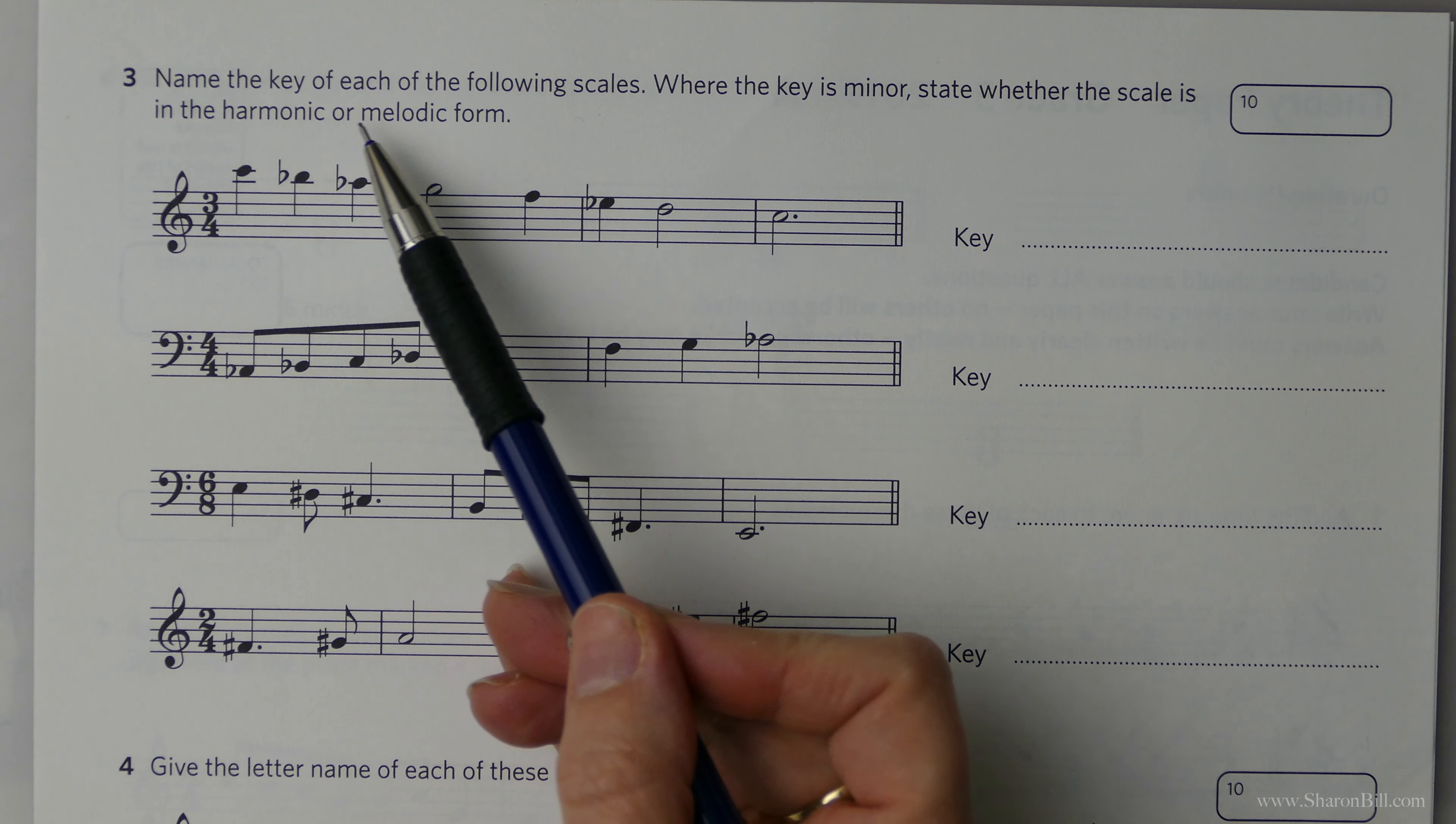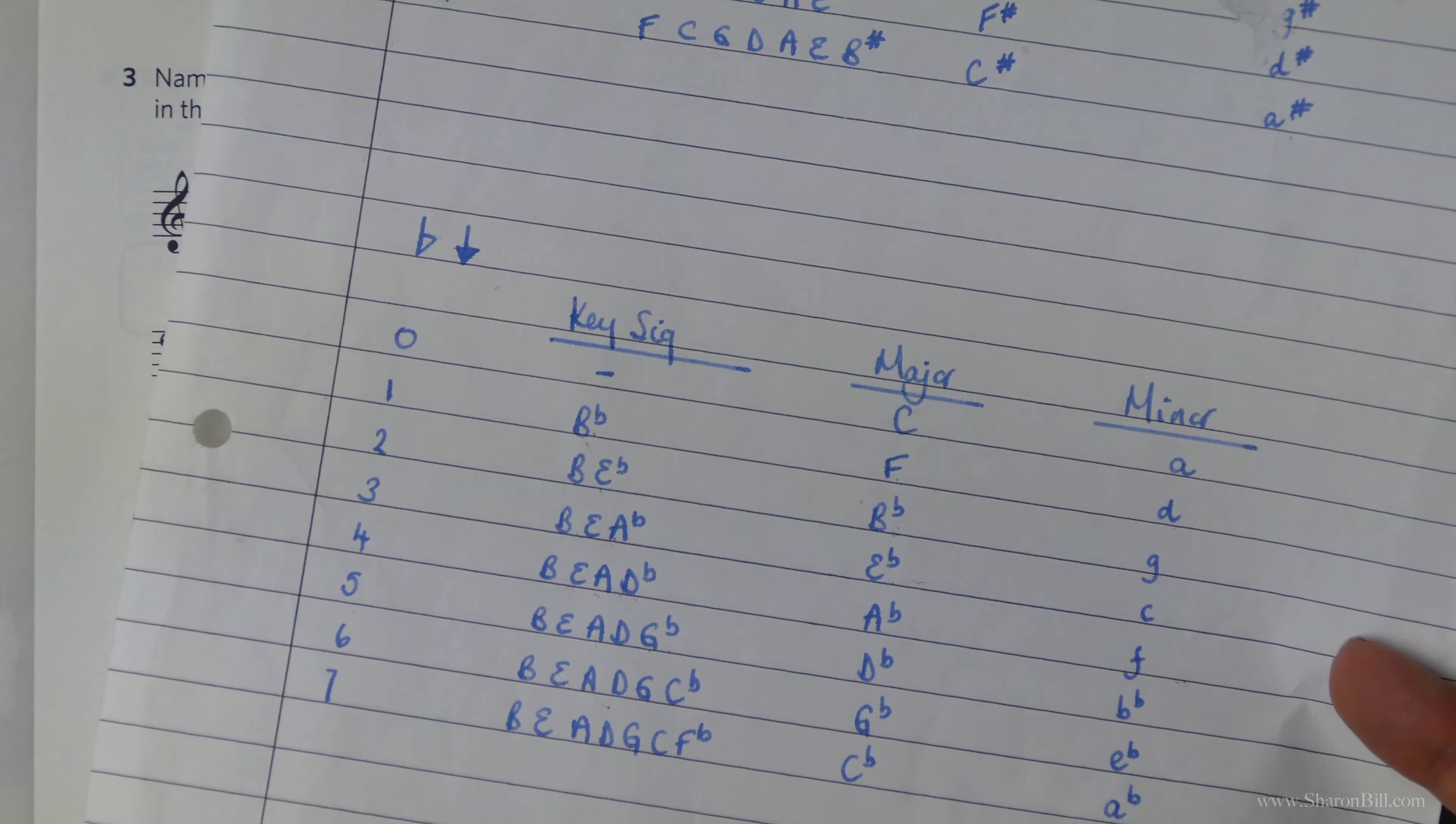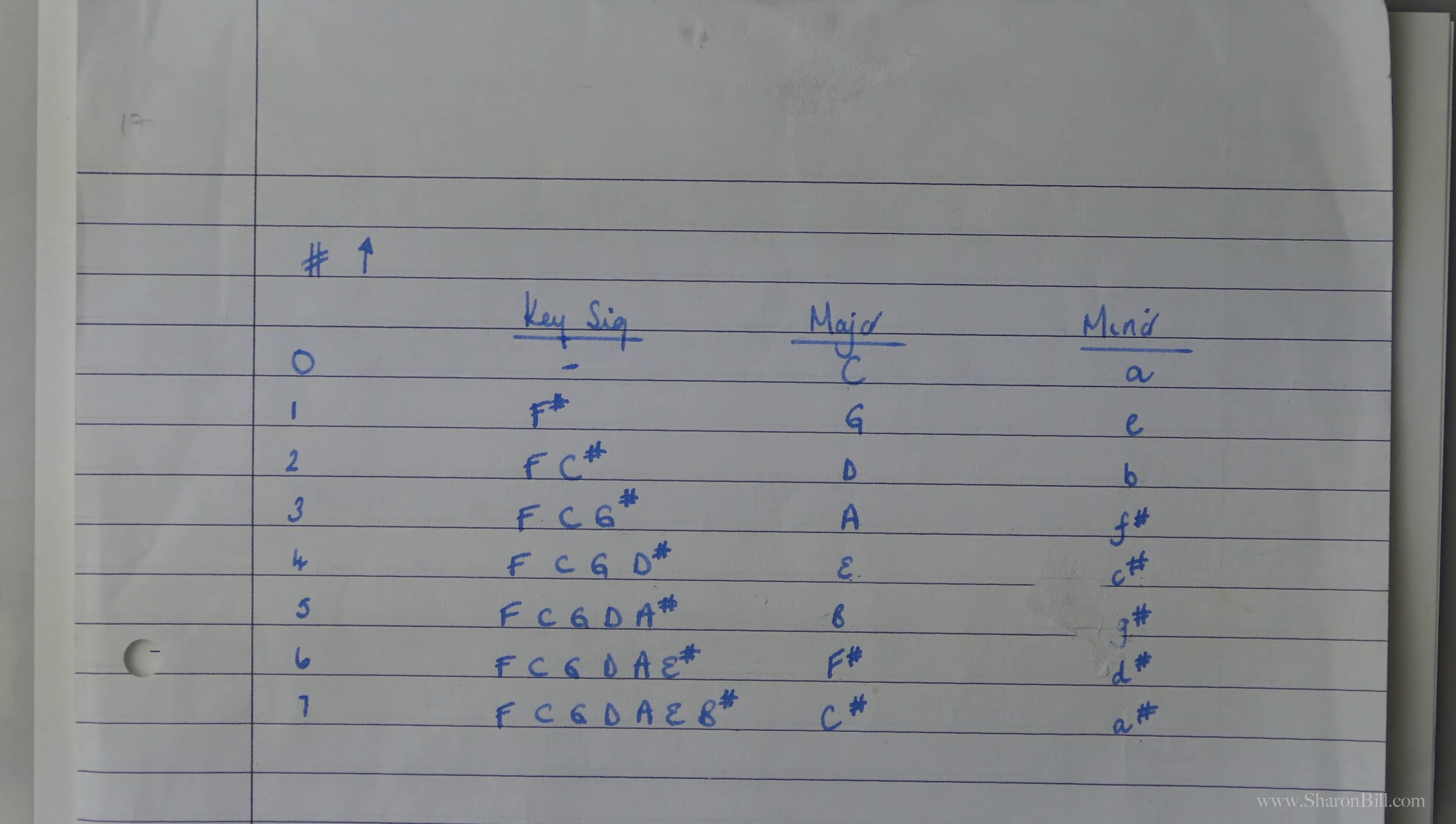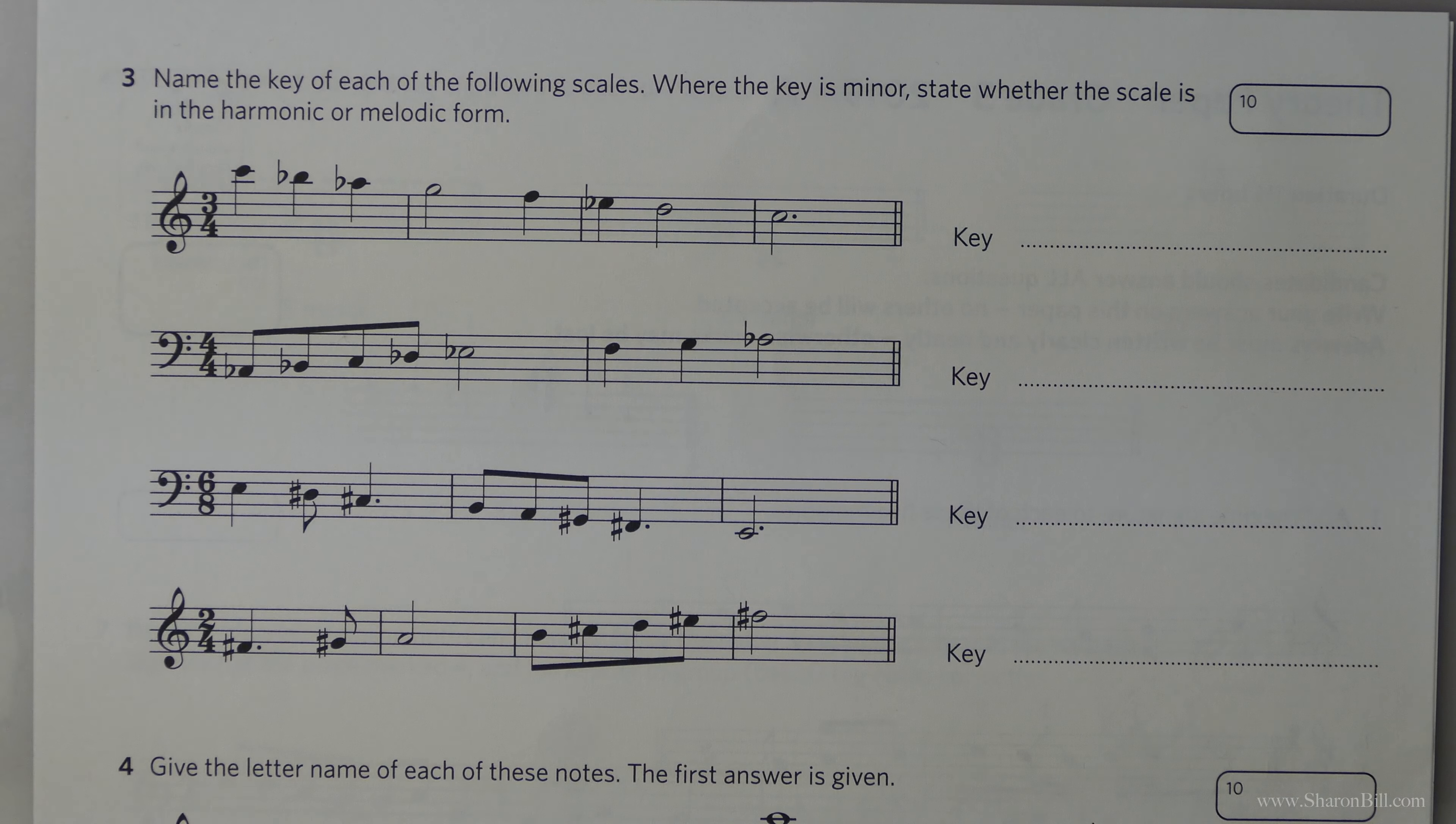So question 3 asks us to name the key of each of the following scales, and then once we've done that, we need to state if it's a minor key whether it's harmonic or melodic minor form. Now I suggest that you always sketch out your circle of fifths just up to the number of sharps and flats that you need to go to. That way you've got your majors and minors straight away. If you're not sure how to do that, if you go onto the playlist of mine, Music Theory for Everyone, you'll find a video there explaining the circle of fifths, and then that helps you to get this down quickly so you're absolutely sure of all of your keys and your related keys.